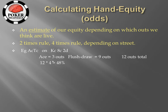One thing that you might find useful is to memorize the different types of draws and how many outs they have. For example: a flush draw has nine outs, an open-ended straight draw has eight outs, a gut shot has four outs, overcards have three outs each so two overcards give you six outs, and small pairs have five outs to hit two pair or trips.